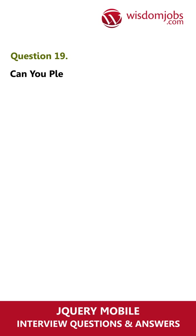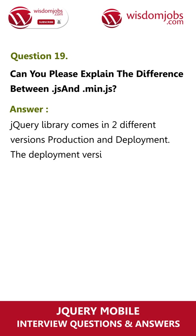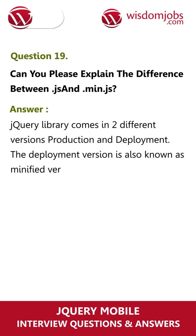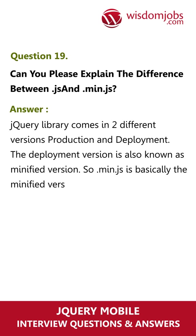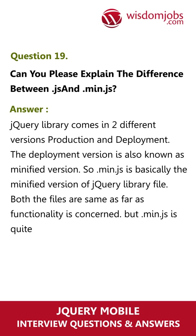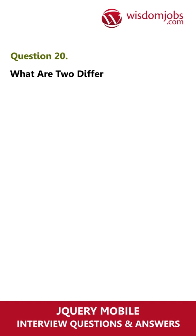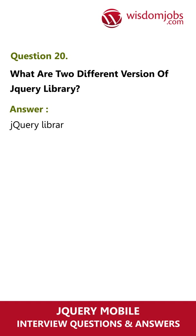Question 19. Can you explain the difference between .js and .min.js? jQuery library comes in two different versions: production and deployment. The deployment version is also known as the minified version, so .min.js is basically the minified version of the jQuery library file. Both files are the same as far as functionality is concerned, but .min.js is quite small in size so it loads quickly and saves bandwidth. Question 20. What are the two different versions of jQuery library? jQuery library comes in two different versions: production and deployment.